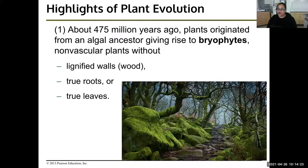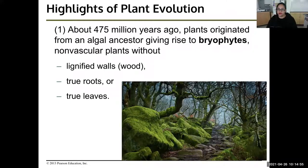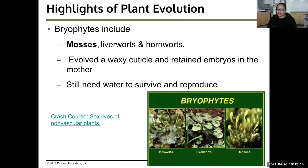About 475 million years ago, plants originated from an algal ancestor, giving rise to bryophytes — non-vascular plants. Non-vascular means they do not have xylem and phloem; that had not evolved yet. They don't have wood, lignified walls, true roots, or true leaves. They really just look like the algae crept out of the pond and covered all the rocks. Bryophytes include mosses, liverworts, and hornworts. They evolved a waxy cuticle and retained embryos in the mother. However, they still needed water to survive and reproduce.